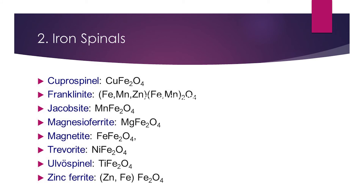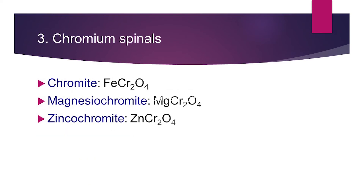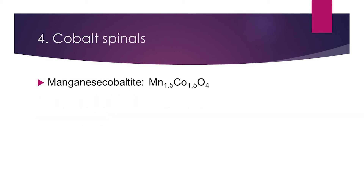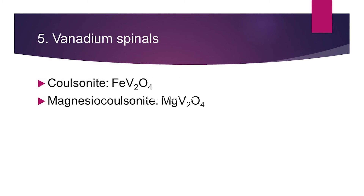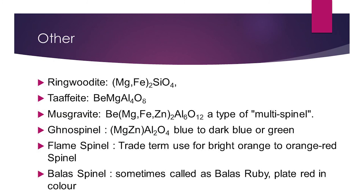After the aluminium spinels, the second category is the iron spinels, which have several subcategories. The third is chromium spinels — including chromite and zincochromite — with three subcategories. The fourth is cobalt spinels, containing only one subcategory. The fifth is vanadium spinels.